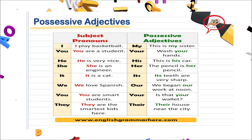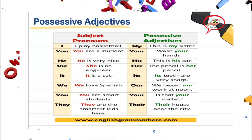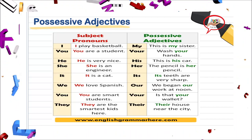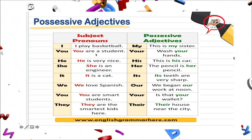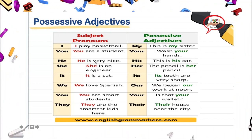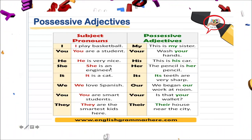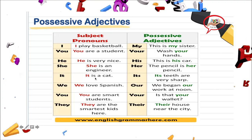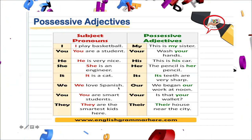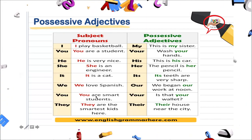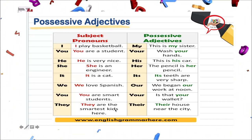Anteriormente ya habíamos visto esos subject pronouns, ¿verdad? Entonces vamos a ver unas oraciones para recordar. For example: I play basketball. You are a student. He is very nice. She is an engineer. It is a cat. We love Spanish. You are smart students. They are the smartest kids here.